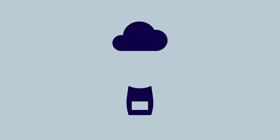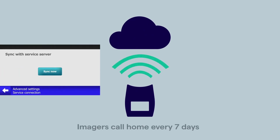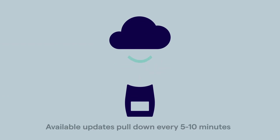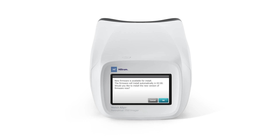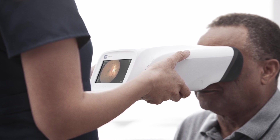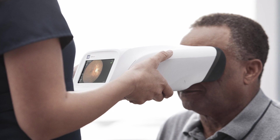The imagers automatically call home every seven days, or they can be manually synced by the operator by pressing Sync Now on the imager. Once the imager calls home, it will pull down any available updates within five to ten minutes, depending on the strength of the wireless connection. Once the update has been received, a message will appear on the imager notifying the operator that the new firmware is available for installation. If an imager operator is in the process of taking an exam, the pop-up message will not appear until after the exam has been completed.